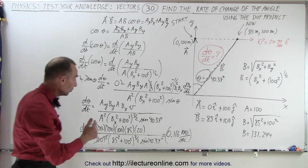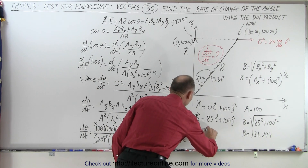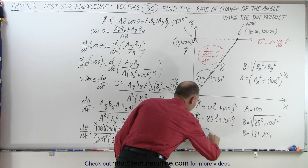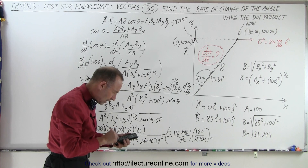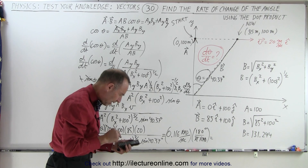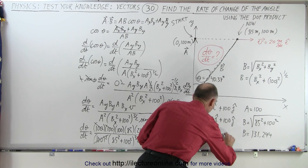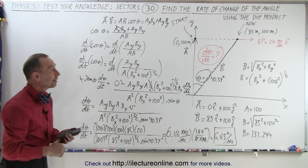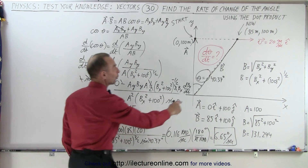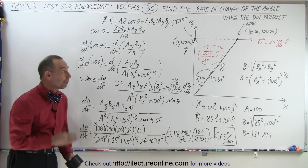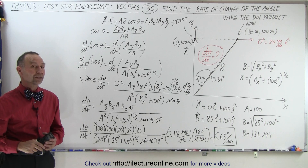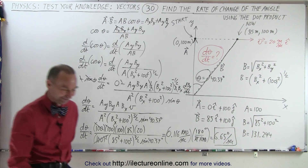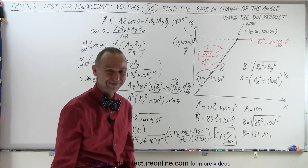Now, if we want to convert that to degrees per second, we multiply that times 180 degrees per pi radian. So multiply that times 180 and divide by pi, and I get 6.65 degrees per second. And that is the rate of change of that angle with respect to time at that very moment when the angle is 40.37 degrees. We figured it out by using the concept of the dot product. And that is how it's done, and that is correct. That's a wrap.